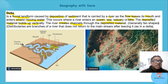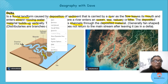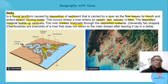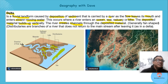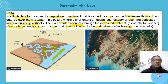Look at what the river is doing — it's creating little channels through the sea. Can you see more channels coming through? These channels, when they go into the sea, never join again — they're part of the sea. These are known as distributaries: branches of a river that do not return to the mainstream after leaving it.